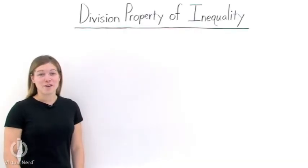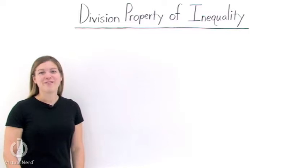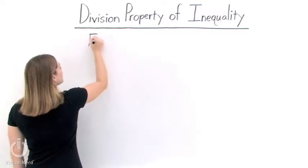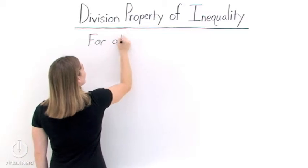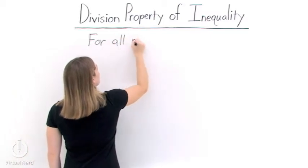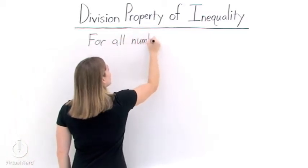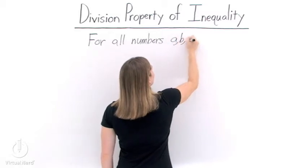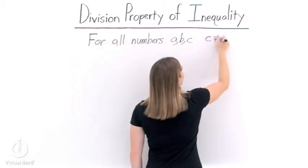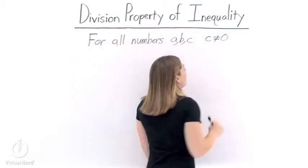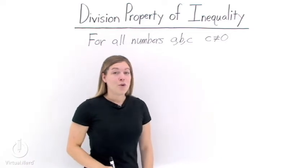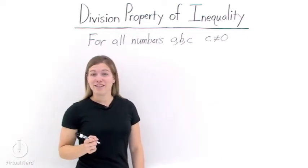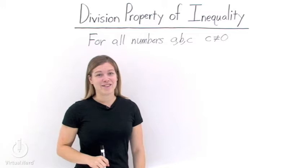What is the division property of inequality? Well, let's look. The division property of inequality starts out like this. We have numbers a, b, and c, with c not equaling 0. Since c does not equal 0, we have two different options: c is greater than 0, and c is less than 0.